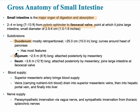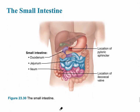The jejunum is a bit longer at 8 feet, and the ileum is the longest part. The blood supply comes from the superior mesenteric artery, while the veins drain nutrient-rich blood into the hepatic portal vein, also simply called the portal vein. The diagram shows the anatomical locations of the shorter duodenum, the jejunum, and then the ileum.